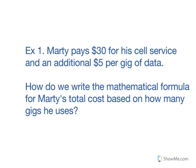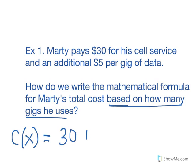So now we're going to look at how do we write the mathematical formula for Marty's total cost based on this fact that we know it's about how many gigs of data he uses. So we said the cost based on the number of gigs of data is equal to what? Well, thirty bucks no matter what, plus an extra five dollars per gig of data. So that five has to multiply how many gigs of data. We don't know yet, but it's five dollars each.